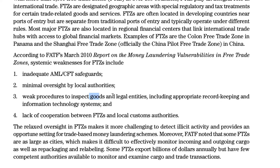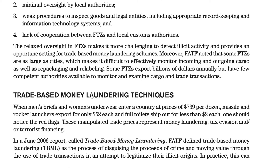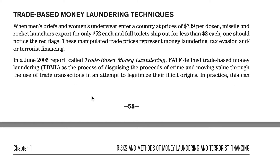These companies are regulated to maintain record-keeping because manipulated invoices are central to trade-based money laundering — through techniques like over-invoicing, under-invoicing, and ghost shipping. Red flags include manipulated trade prices: men's underwear entering a country priced at $709 per dozen, missile and rocket launchers exported for $52 each, and toilets shipped for less than $2 each. These misrepresented prices indicate money laundering, tax evasion, or terrorism financing.